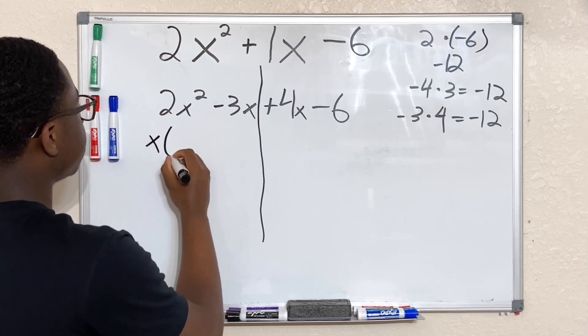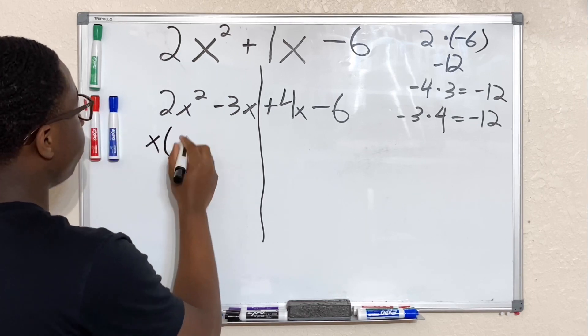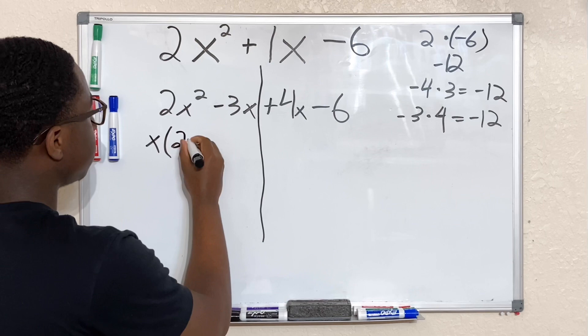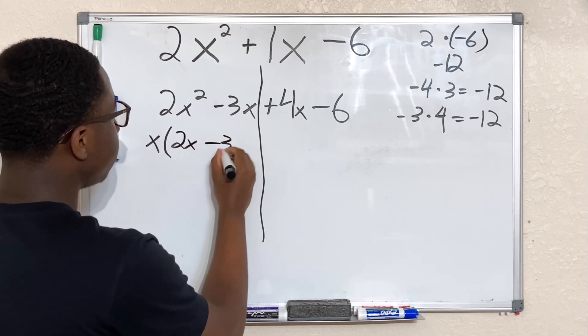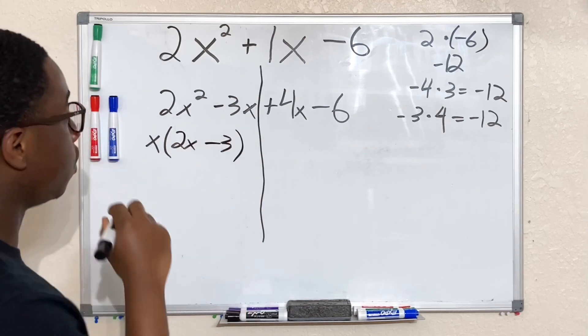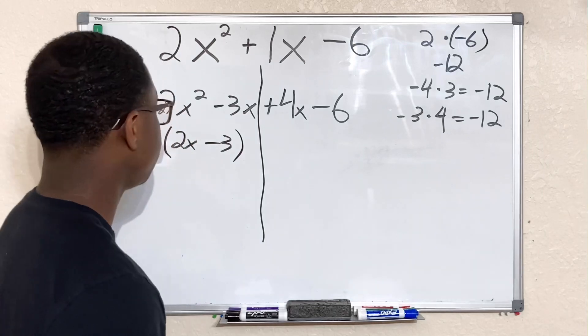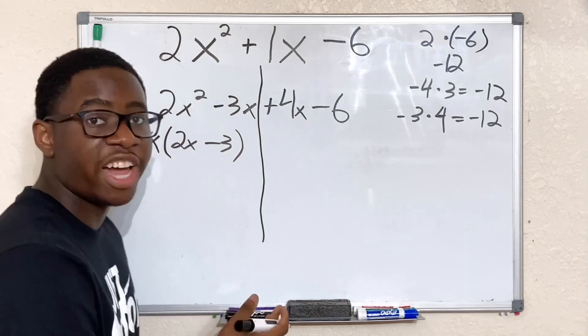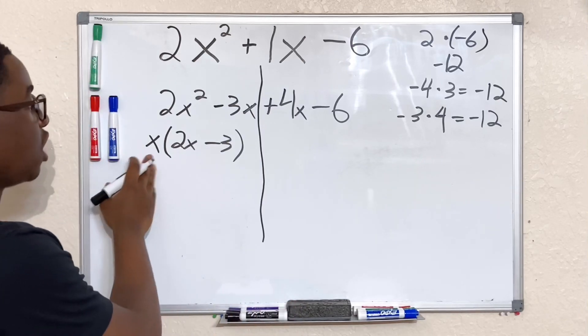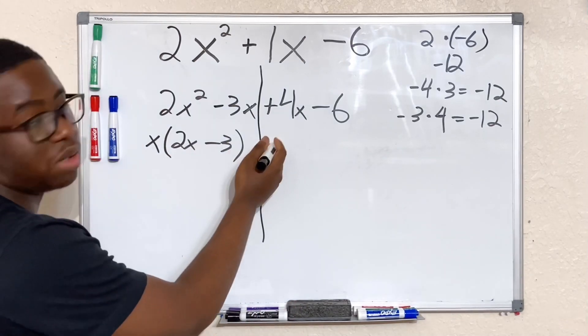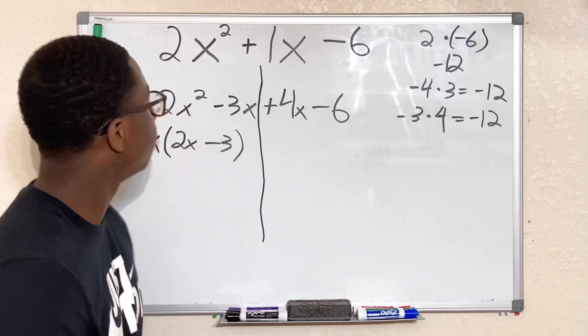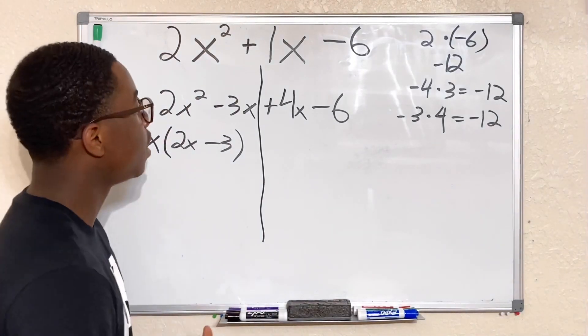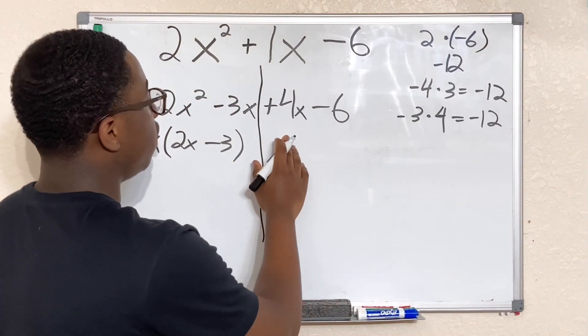So now we're left with x. Now we multiply x by... here we have 2x and here we have minus 3. Now it's a great thing to know—both sides have to have the same factor. The outside factor can be different. This could be x, this could be maybe -8 or whatever, but the inside factor, which is in parentheses, must be the same.